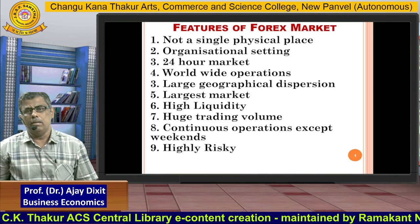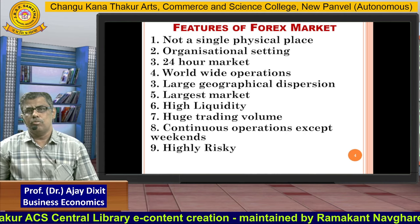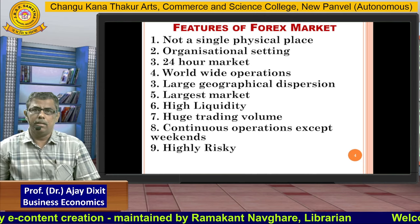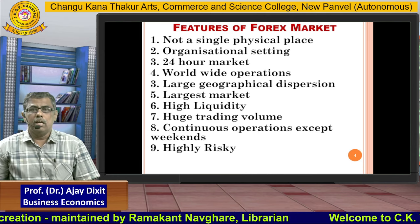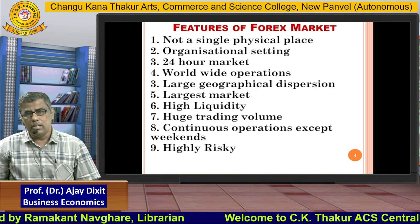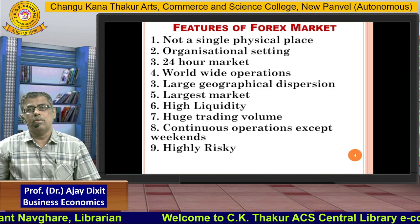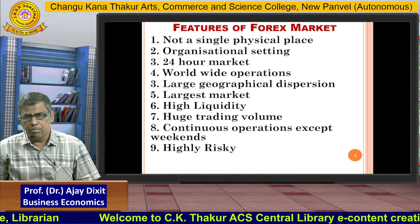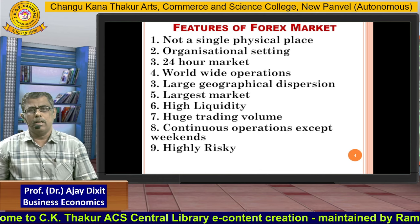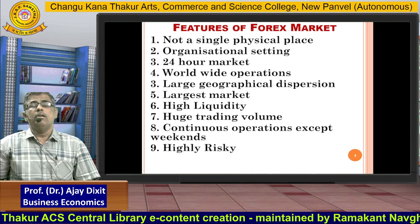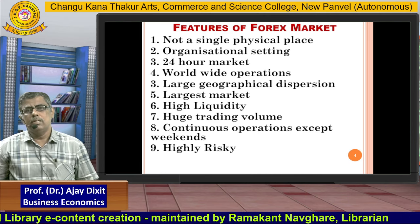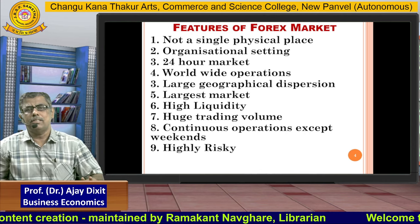Fourth, worldwide operations — through online methods, we can exchange foreign currencies in America, Russia, England, Pakistan, Bangladesh, Japan, Indonesia, Australia, and everywhere. The foreign exchange market operates throughout the globe. Fifth, there is a large geographical dispersion, meaning the market is scattered worldwide — Australia is far from America, America is far from India, and Russia is far from India.